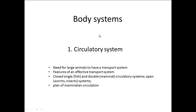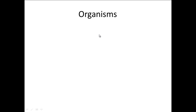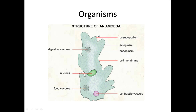So why do large animals need to have a transport system? Well if we have a look at a unicellular organism — so something like an amoeba — you can see here you've just got one cell and this cell actually carries out all of its functions. For example it will carry out its assimilation of its food,